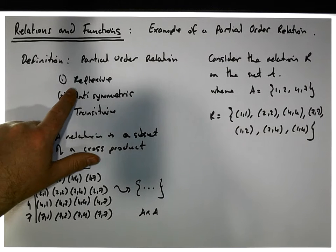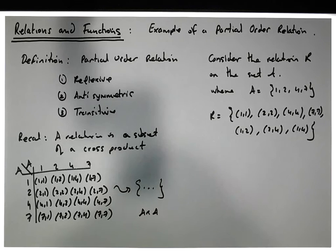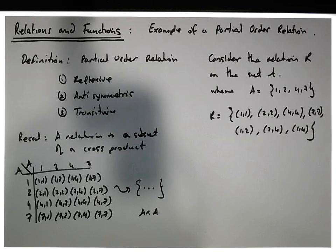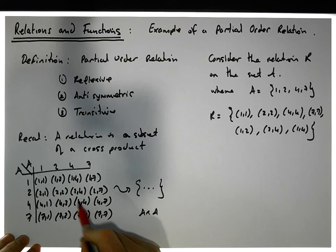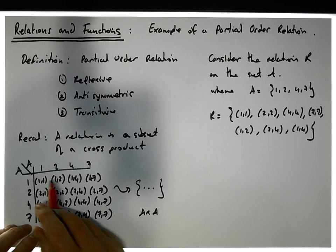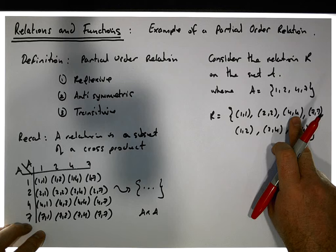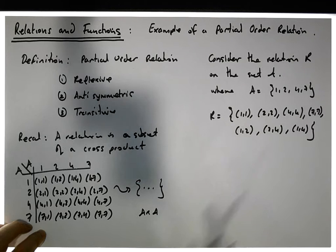Is it reflexive? Well, we know for a relation to be reflexive it must contain all the ordered pairs down this particular diagonal — (1,1), (2,2), (4,4), (7,7). And you can actually see it does contain them: (1,1), (2,2), (4,4) and (7,7). So we know that the relation is reflexive.